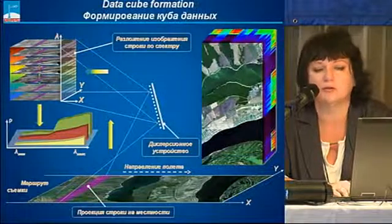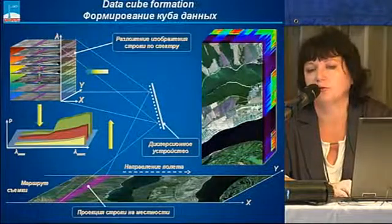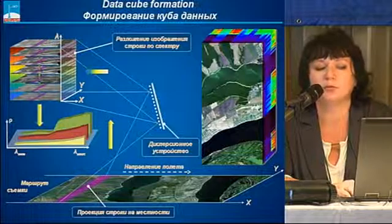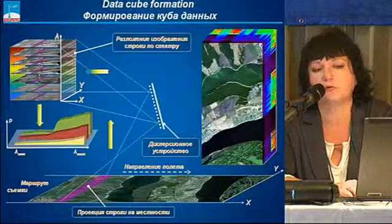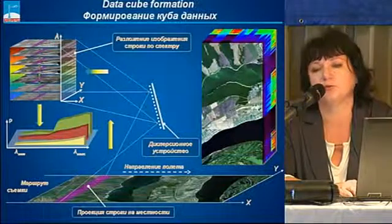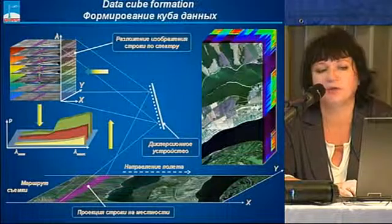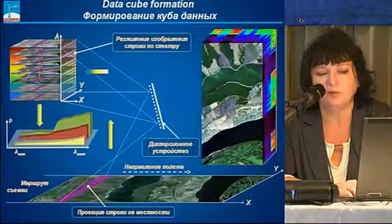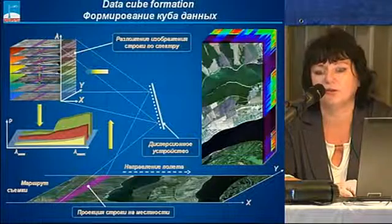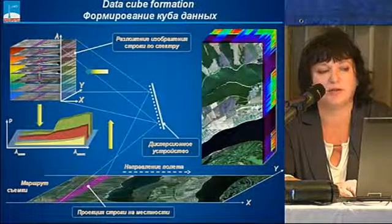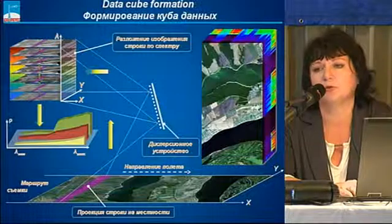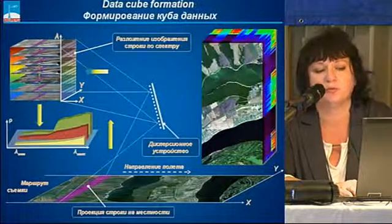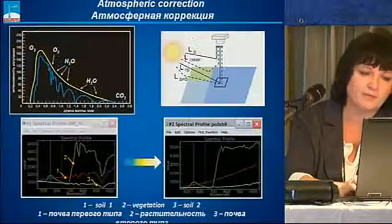How does the data cube take shape, based on the example of Samara region? During the scanning of Earth's surface using a dispersion device, a multi-dimensional image is formed where two coordinates record the spatial location of objects and the third coordinate provides spectral characteristics. Each pixel ends up having its own spectral range, which makes it possible to identify objects.